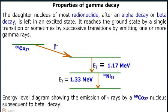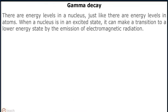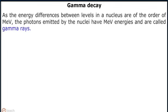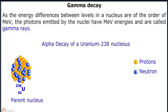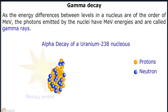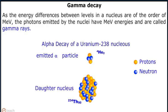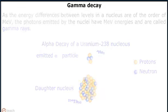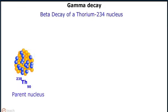An energy level diagram shows the emission of gamma rays by a cobalt-60 nucleus subsequent to beta decay. There are energy levels in a nucleus, just like there are energy levels in atoms. When a nucleus is in an excited state, it can make a transition to a lower energy state by the emission of electromagnetic radiation. As the energy differences between levels in a nucleus are of the order of mega-electron volts, the photons emitted are called gamma rays.